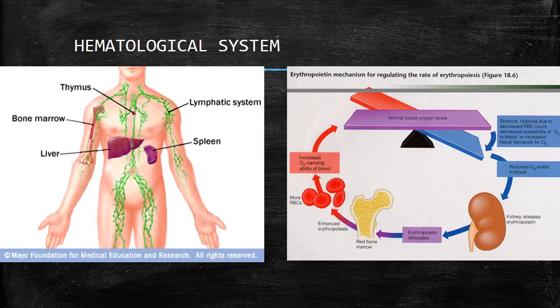Referring to the image to the right, the erythropoietin mechanism for regulating the rate of erythropoiesis. Basically, you want to remember that low oxygen levels or high carbon dioxide levels stimulates the kidneys to release erythropoietin, which stimulates the bone marrow and the process of erythropoiesis, with the end result being an increased production of red blood cells, thereby increasing the oxygen-carrying capacity.